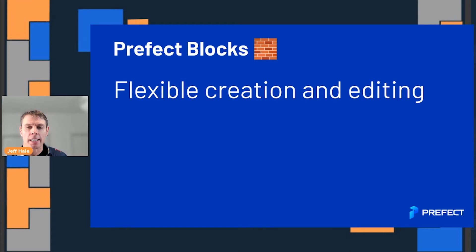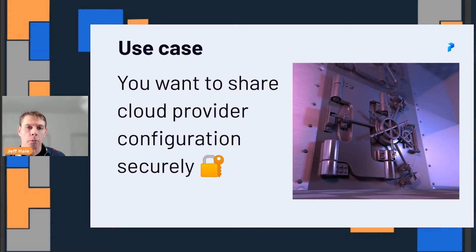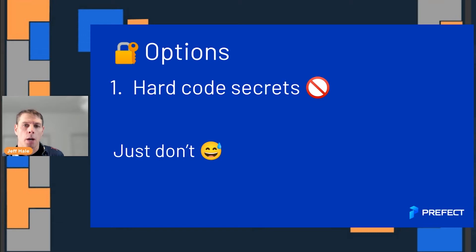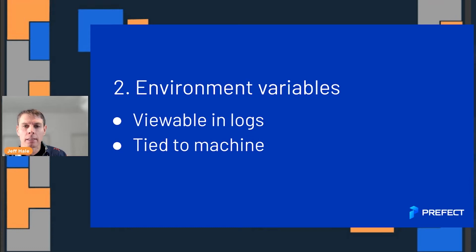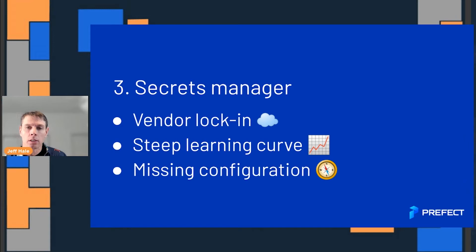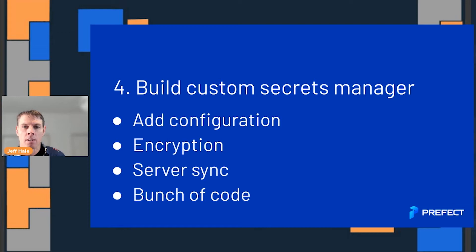These Prefect blocks give you flexible creation and editing. So let's talk about a potential use case. Say you want to share some cloud provider configuration securely with teammates. You've got some different options. First, you could just hard-code your secret — but we still don't want people mining Bitcoin on our AWS server because they got access to our secret keys. You could use environment variables, but they can be viewable in logs and are often tied to the machine where you are. You could use a secrets manager, but these have vendor lock-in and often a steep learning curve.